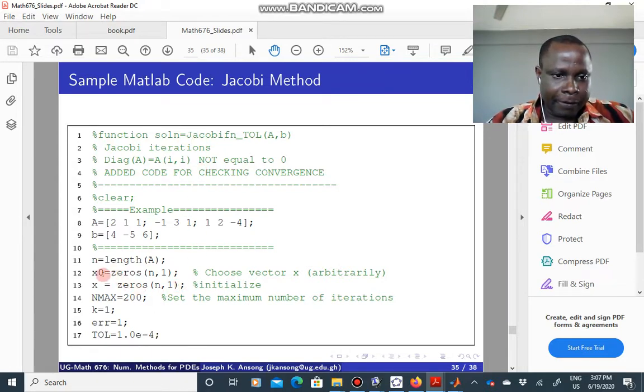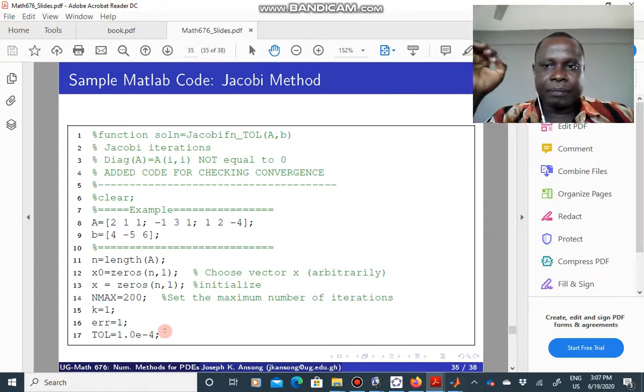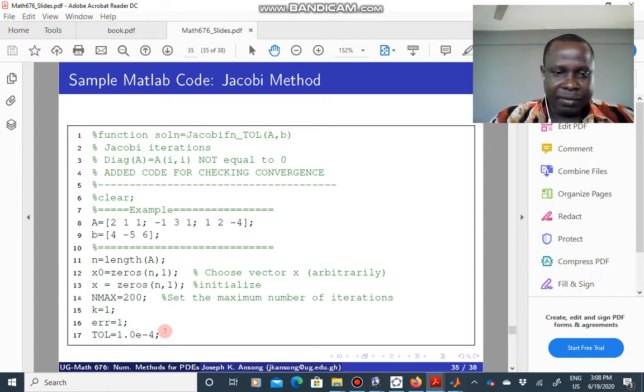This is the initial condition x naught. This is just an initialization for your solution vector x. N axis, you give it how many times you should iterate. This is like 10 to the minus 4. You can change this to 10 to the minus 6 if you want more accuracy.